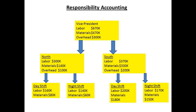Managers should only be held responsible for what they can control. This is an important part of evaluation of personnel. In the example shown, shift managers have control over labor and materials used, but only the division manager has control over overheads. The vice president in this example has control over the north and south divisions. The degree of responsibility here is shown as dollar values.